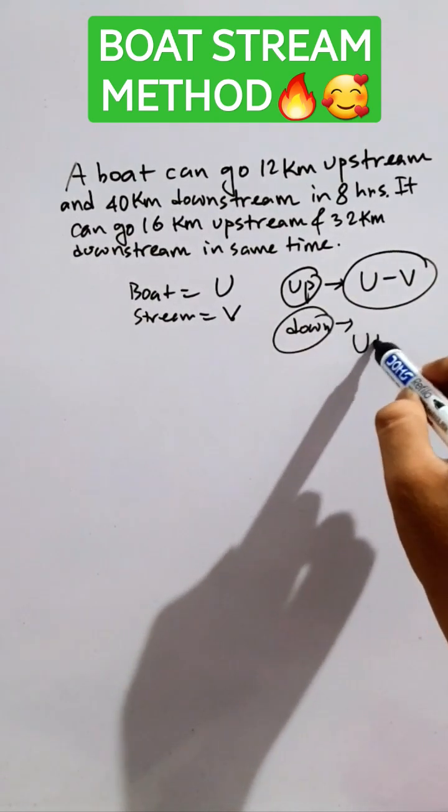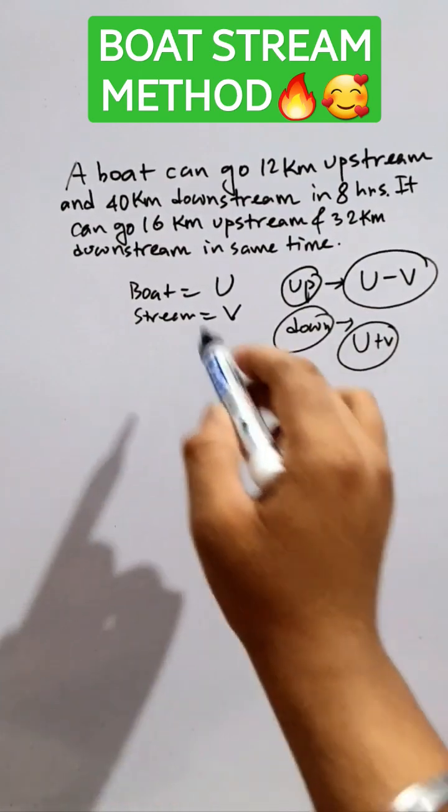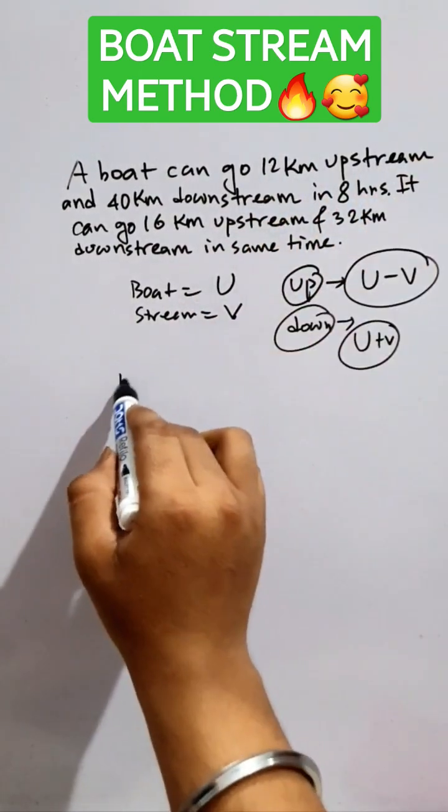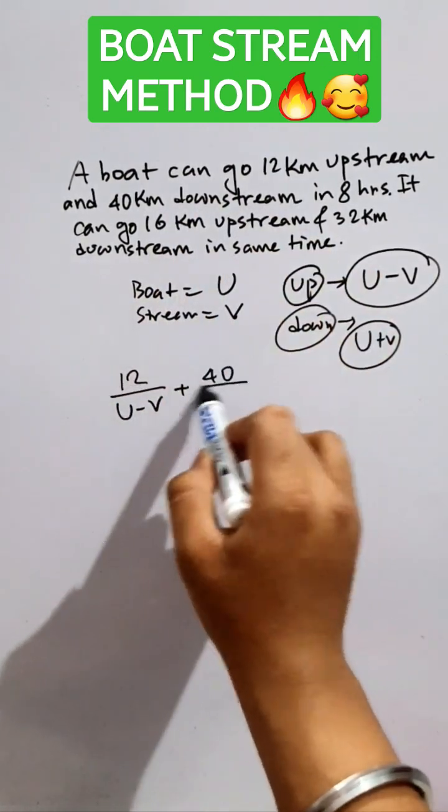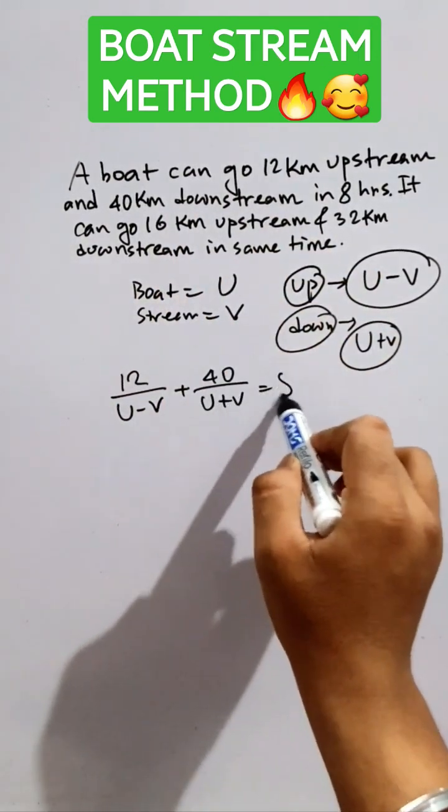Now 12 kilometers upstream, the time taken for that purpose is 12 by u minus v, plus 40 kilometers downstream, it will be 40 by u plus v. The time taken is eight. Equation one has been derived.